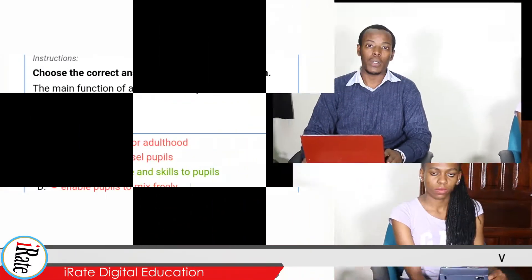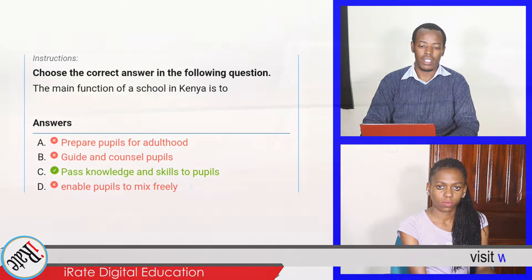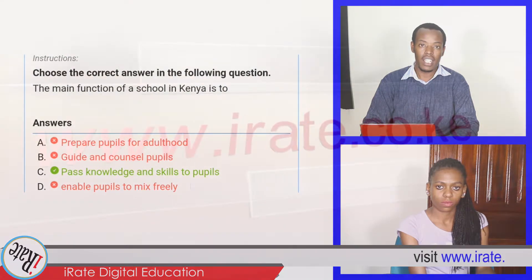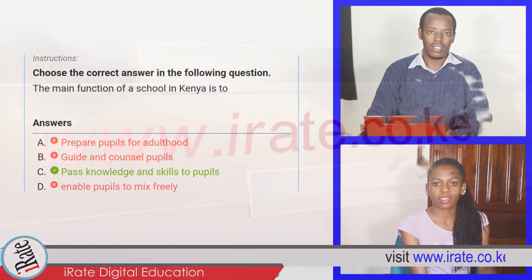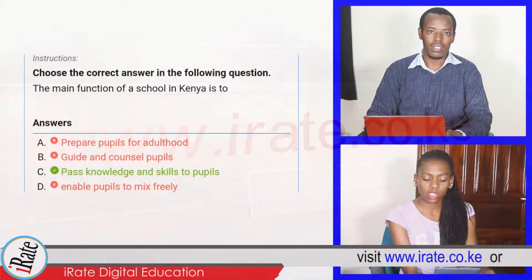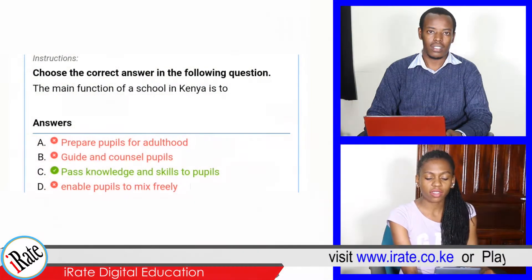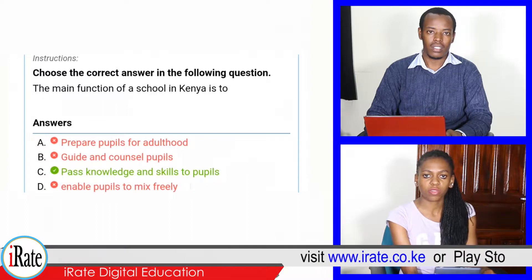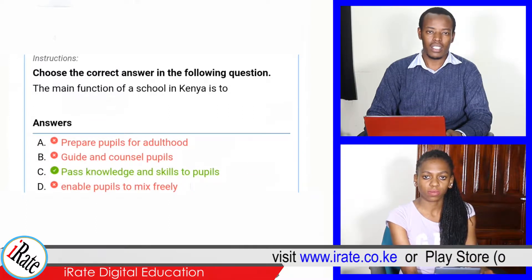Choose the correct answer in the following question. The main function of a school in Kenya is to... The answer is pass knowledge and skills to pupils. That is correct.